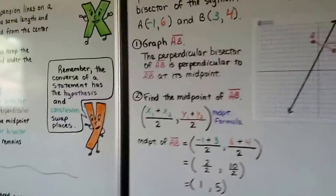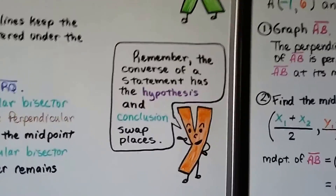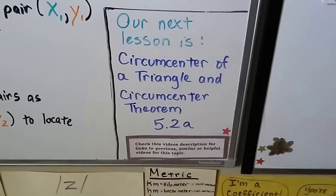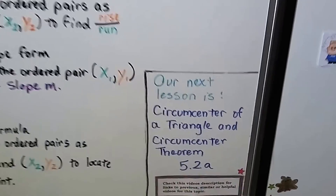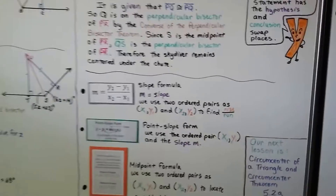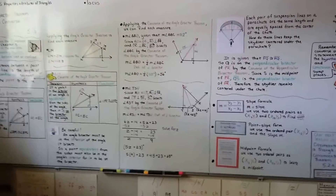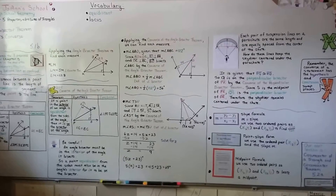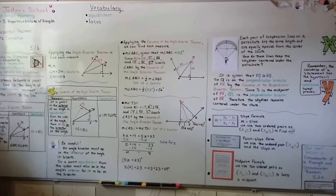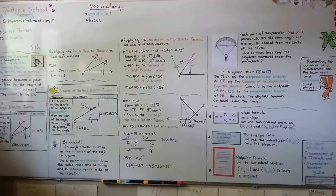Remember, the converse of a statement has the hypothesis and conclusion swap places. Our next lesson is circumcenter of a triangle and circumcenter theorem, section 5.2a. I hope you were able to write down these theorems and their converses, and now understand angle bisectors. Have a great day — keep trying, I'm proud of you. Hit that like button and I'll see you next time!